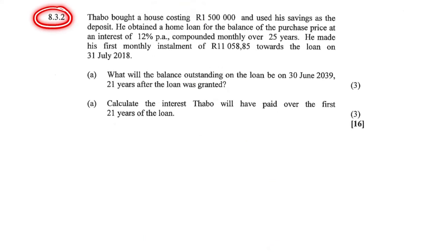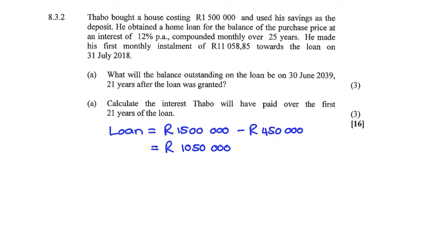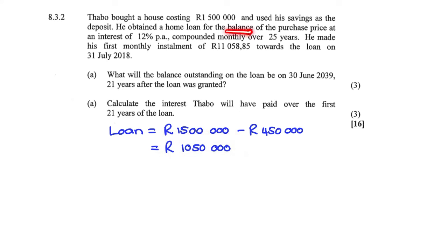8.3.2: Tabu bought a house costing 1.5 million Rand and used his savings as a deposit. He obtained a home loan for the balance of the purchase. The value of the loan would be 1.5 million Rand minus the 450,000 Rand deposit. So the full loan is 1,050,000 Rand — that is the balance of the price.